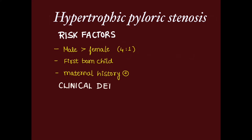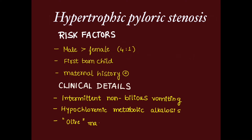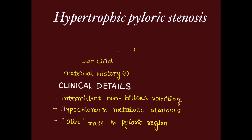The child presents with intermittent non-bilious vomiting. Laboratory findings include hypochloremic metabolic alkalosis, and on examination we can find an olive-shaped mass in the pyloric region of the child.